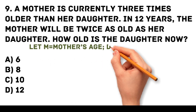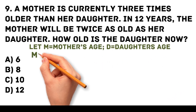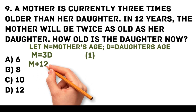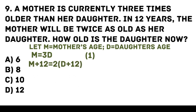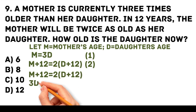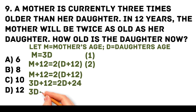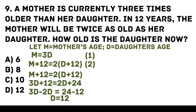Let M be the mother's age and D be the daughter's age. From the first sentence: M equals 3D — first equation. In 12 years the mother will be twice as old as her daughter: M plus 12 equals 2 times (D plus 12) — second equation. Substituting: 3D plus 12 equals 2D plus 24. Combining terms: 3D minus 2D equals 24 minus 12. Therefore D equals 12.